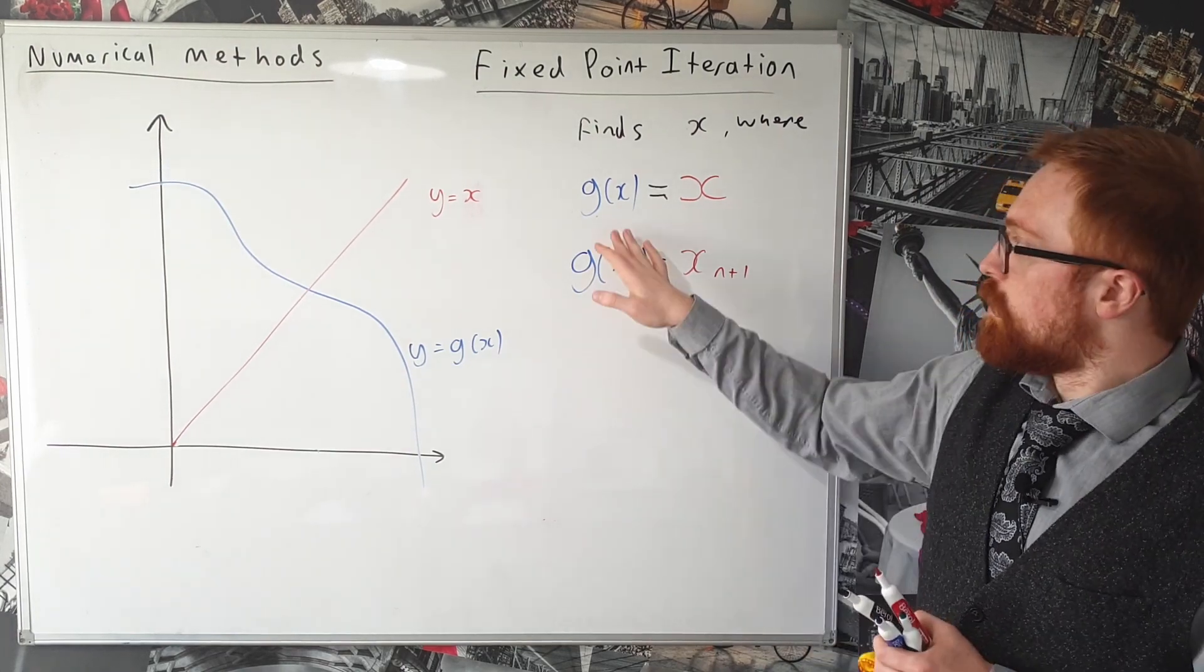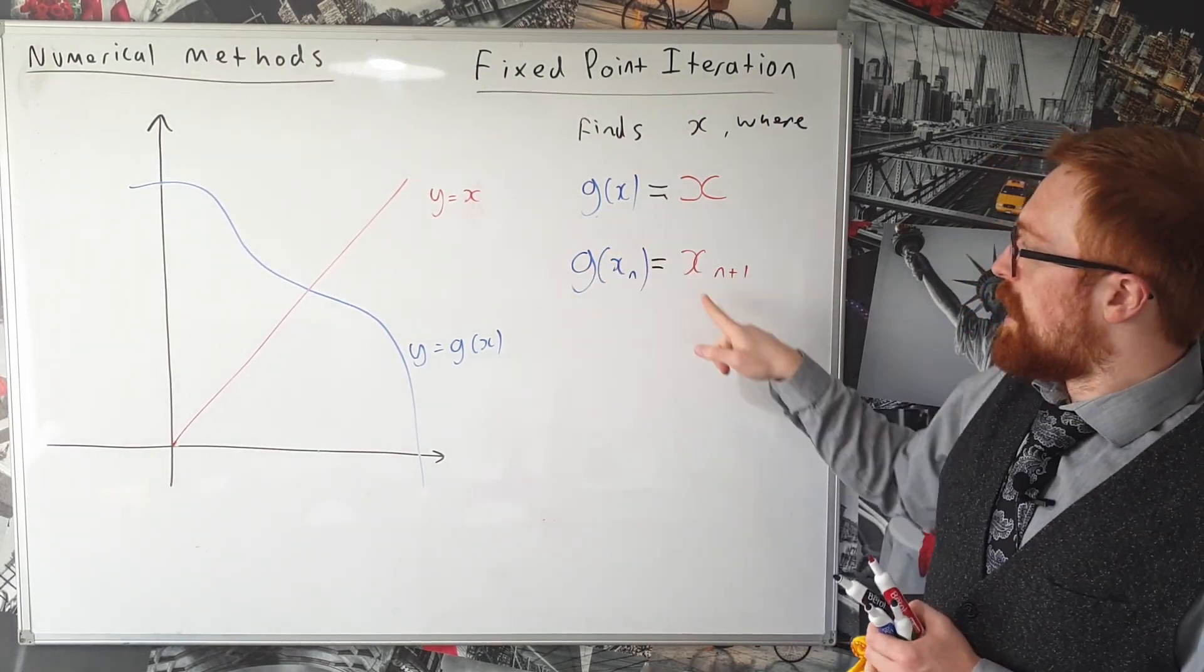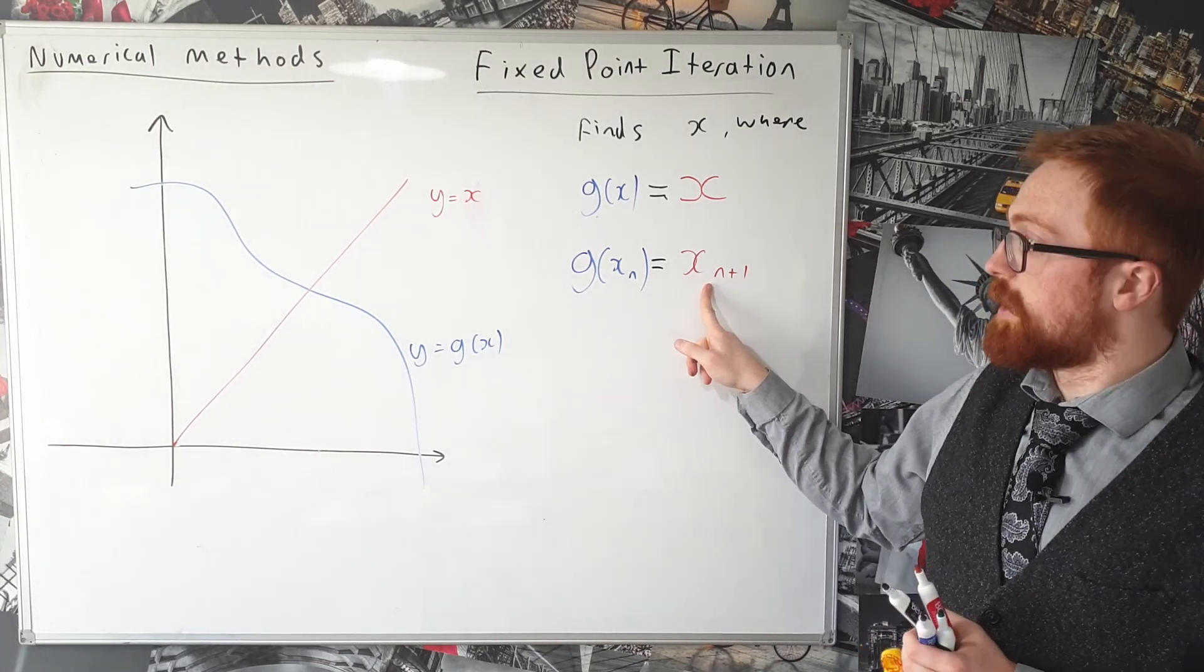So we pick a point to start, we substitute it into our function and that tells us what the new x value is.